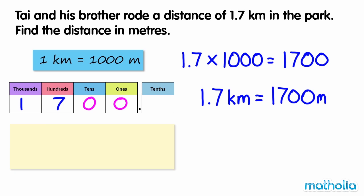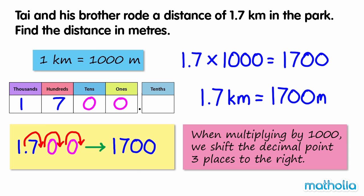Another way we can multiply by one thousand is to shift the decimal point. Shifting the decimal point three places to the right also gives one thousand seven hundred. When multiplying by a thousand, we shift the decimal point three places to the right.